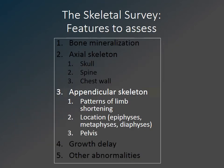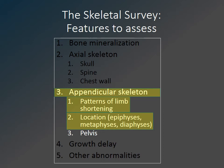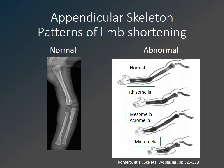Next we will move on to an assessment of the appendicular skeleton. We want to assess specific patterns of long bone limb shortening and where in the bone the abnormality occurs: the epiphysis, metaphysis, diaphysis, or some combination. When the proximal segment or humerus is shortened this is rhizomelia; when the middle segment is shortened, mesomelia; when the distal segment is shortened, acromelia; and when the entire limb is shortened, micromelia.